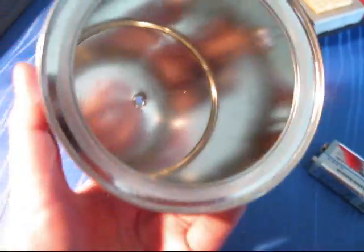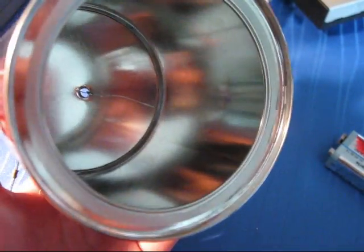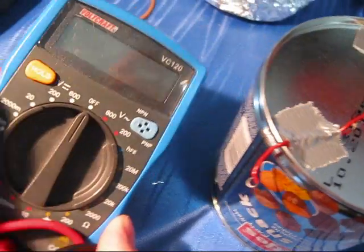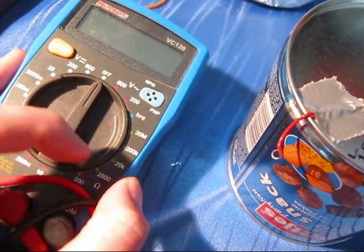What you need for this is a can that is not coated on the inside, so it must be conductive on the inside, which you can check with a multimeter like this one. You can just check if it conducts or not, and if it does, you're good to go.